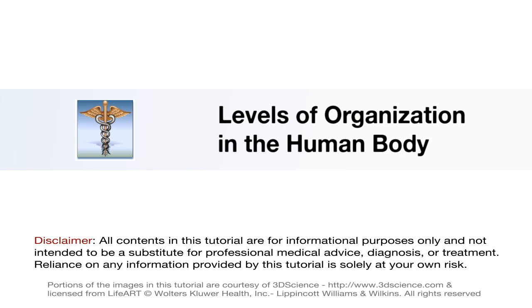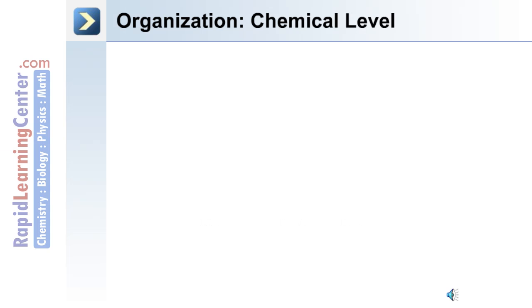Now let's move on to discuss the levels of organization in the human body — organization at the chemical level and the tissue level. Let's begin with organization at the chemical level.